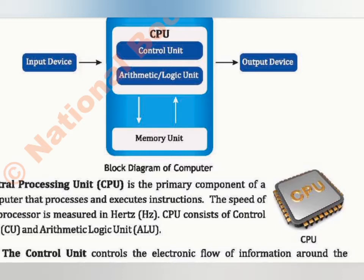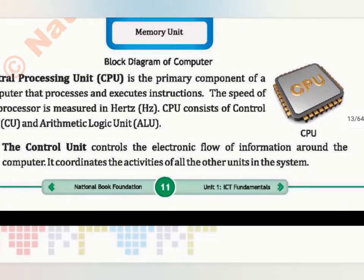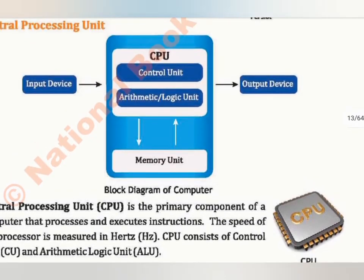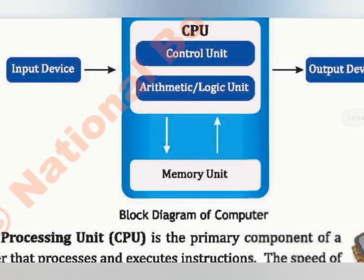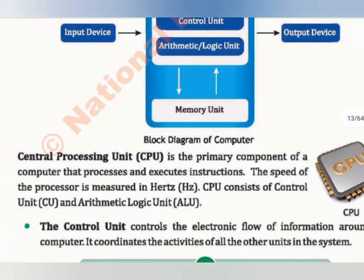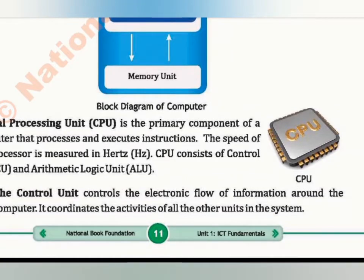CPU consists of the control unit and arithmetic logic unit. The control unit controls the electronic flow. It coordinates the activities of the other units in the system. It will control the flow of information around the computer and coordinates the activities of the other units.